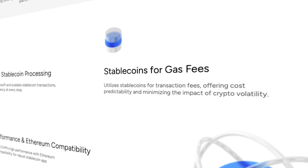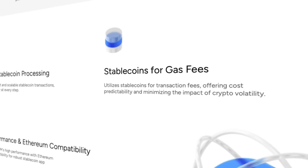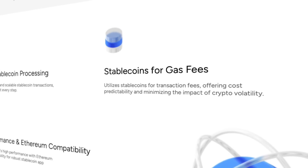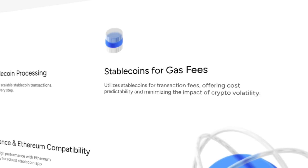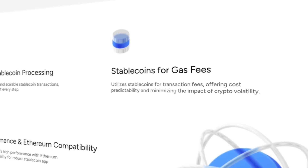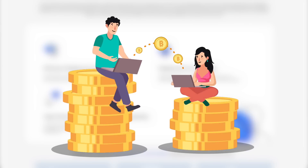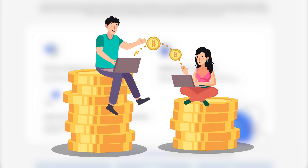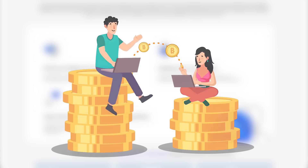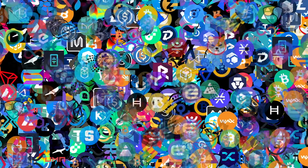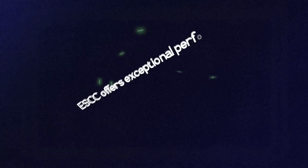One of the distinctive features of ESCC is the stable coin gas mechanism, which provides a fixed transaction fee of only $0.005. This low cost makes transactions predictable and accessible for users, optimizing the experience of interacting with the blockchain and making it easy to estimate the cost of each operation. This way, users can focus on their applications without worrying about the sudden increase in transaction costs.